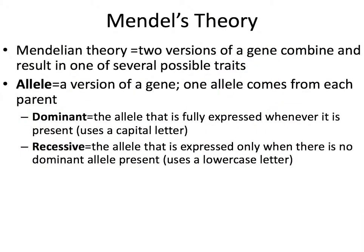Summing up Mendel's theory: there are two versions of a gene that combine and result in one of several possible traits. An allele is the name of a version of a gene — it's a really important term. One allele comes from each parent, so think of alleles as different versions of the same gene. We have dominant alleles and recessive alleles. The dominant allele is one that is fully expressed whenever it is present, and we use a capital letter to indicate it. A recessive allele is expressed only when the dominant one is absent.